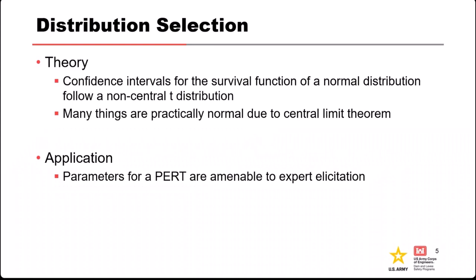When selecting distributions, many things inform that decision. One is theory—what should the distribution be? For example, the confidence intervals for the exceedance curve or survival function of a normal distribution follow a non-central T distribution; we can prove that mathematically. Also, because of the central limit theorem, some things trend toward being normally distributed, which might be a reason to lean toward a particular distribution.